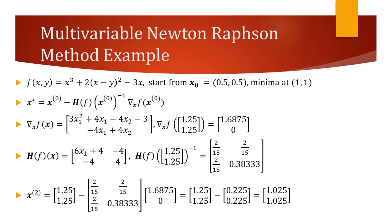In the previous step, we have already found the gradient and the Hessian for this function. So this time, we can just evaluate them at the current point and find a new point. As seen on the bottom of the slide, the newer point is even closer to the actual minimum.